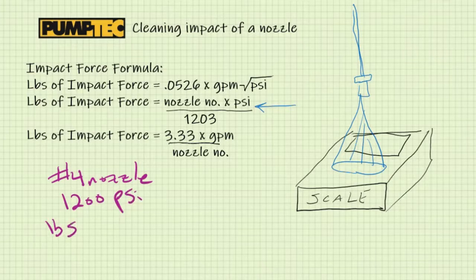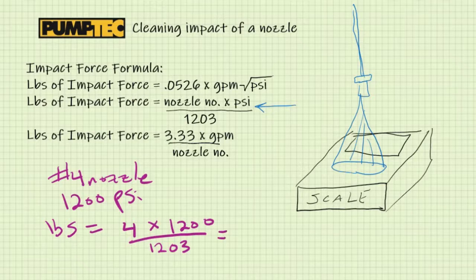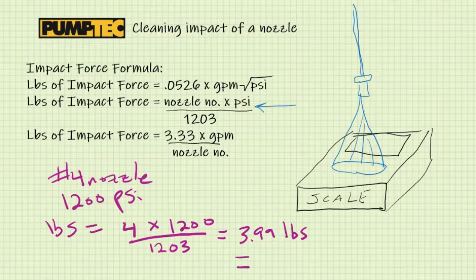So we'll calculate that out. Pounds equals four times 1,200 divided by 1,203. And I already calculated this. It's 3.99 pounds. That's equivalent to 63.84 ounces.